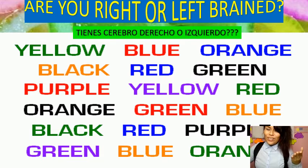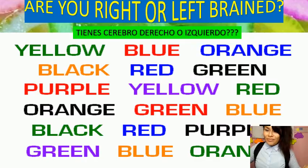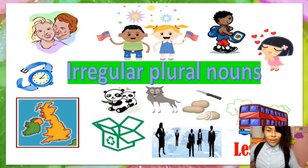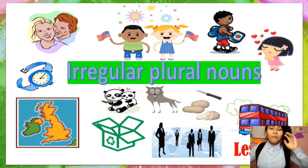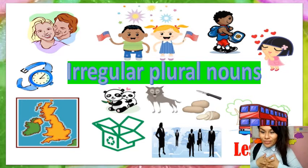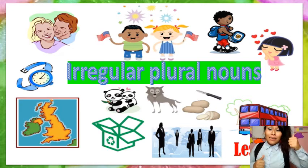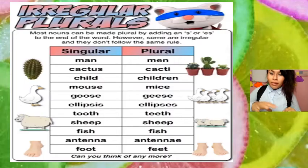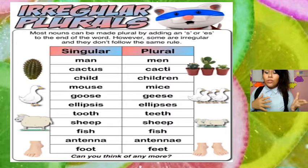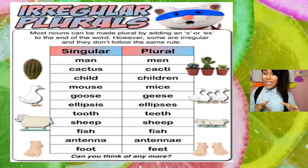That is a good exercise for your brain. Okay, but now let's continue with today's topic. We're going to talk about irregular plural nouns. The irregular plural nouns in English are a little different — similar to what we discussed last class about irregular forms.